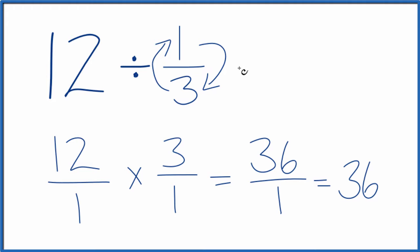So in answer to our question, 12 divided by 1/3 is 36. If you multiply 36 times 1/3, you'll get 12. So we did this correctly.